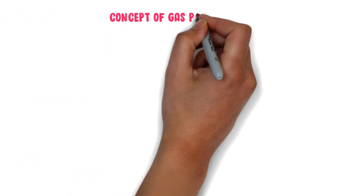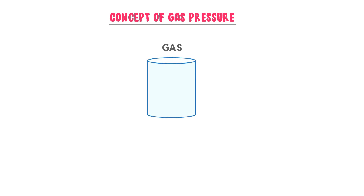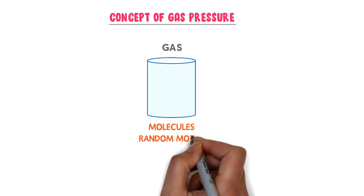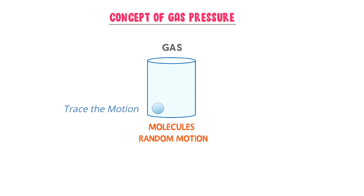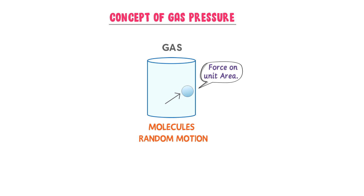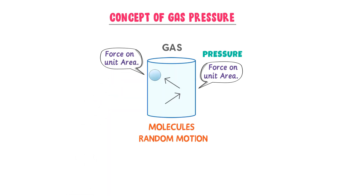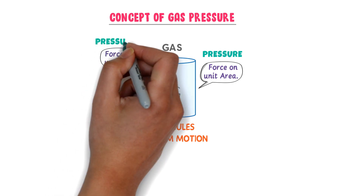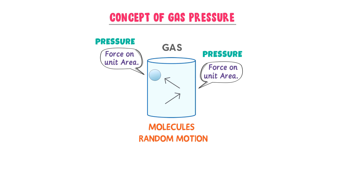Now let's understand the concept of gas pressure. Consider gas enclosed in this container. There are millions or billions of gas molecules present inside this container which are randomly moving. Tracing the motion of one gas particle: it moves and collides with the wall of the container, exerting force on unit area — which we call pressure. It then moves in another direction and collides with another wall, again exerting pressure. Thus, during every collision, all the gas molecules exert pressure on the wall of the container.